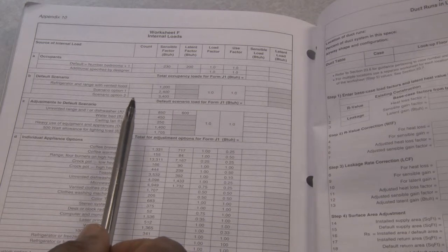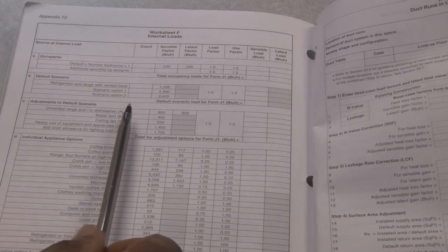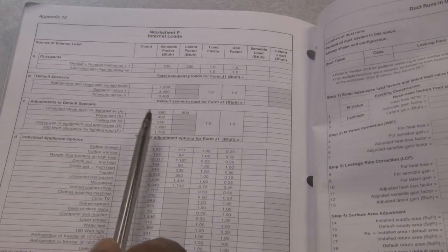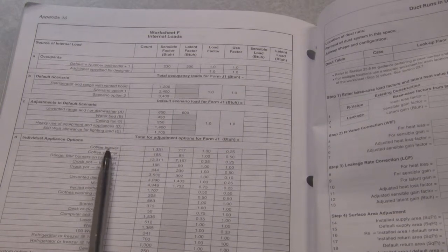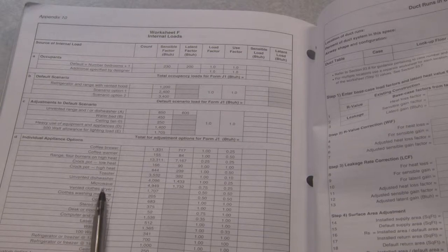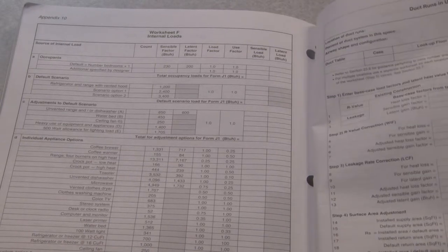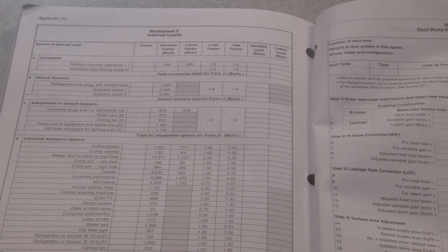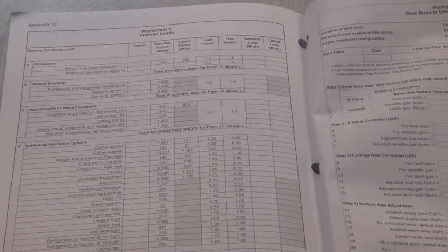In other words, in the summertime, we have to get rid of that heat or maybe to maintain the temperature. Other appliances such as coffee makers and microwaves all can add heat to a house. So worksheet F looks at those internal loads.